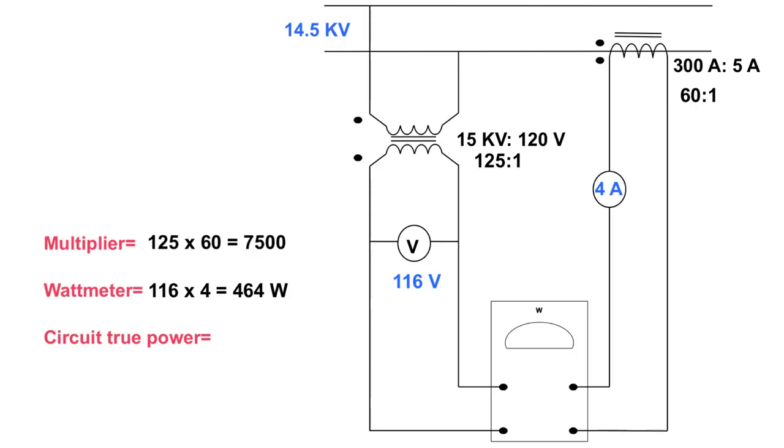what I can do is take this power here that I'm reading on the wattmeter and use my multiplier so I can go 464 watts times 7500 and I would get my circuit true power on the primary side. That ends up being 3.48 megawatts.